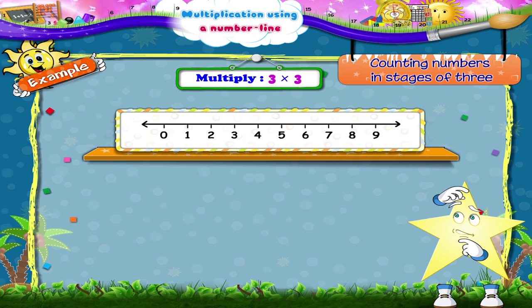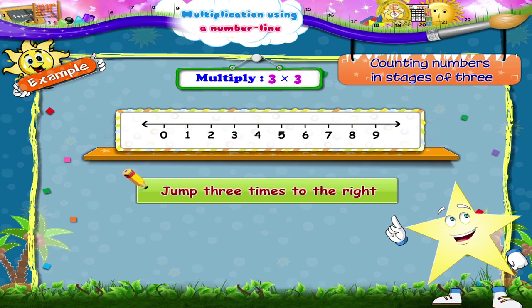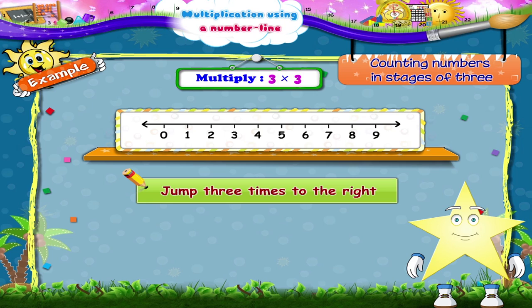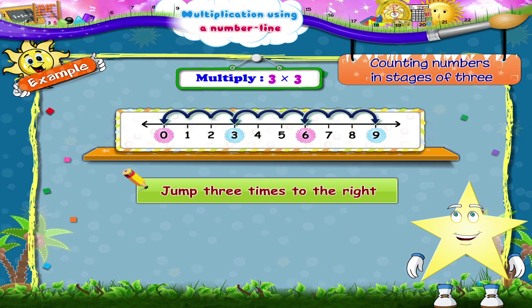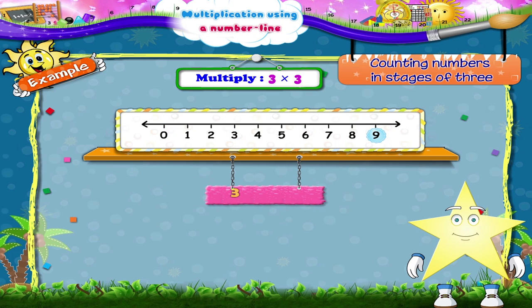Consider the example three into three. So how many times will you jump? Yes, you have to jump three times to the right. So starting from zero you jump to three, then six, and then nine. So three into three is equal to nine.